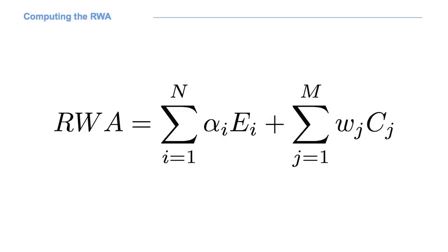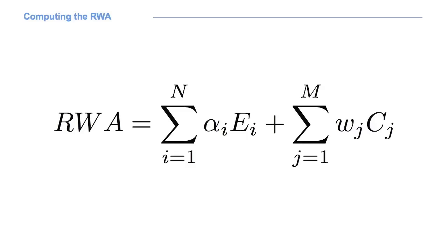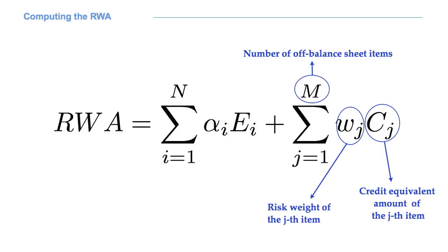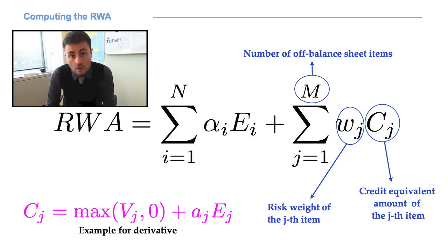So this is the formula we can use to compute risk-weighted assets. As you can see, we have two big components: a summation in i and a summation in j. The summation in i is related to on-balance items. In this case, their principal amounts are multiplied by specific risk weights which depend on the nature of the different items. Then we have the summation in j, which concerns off-balance sheet items. In this case, we sum the products of credit equivalent amounts and risk weights.